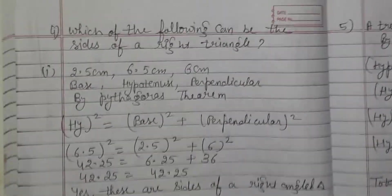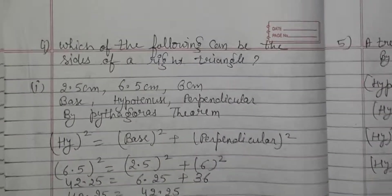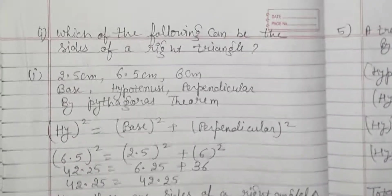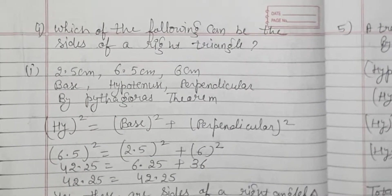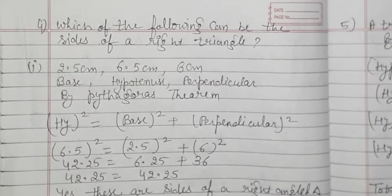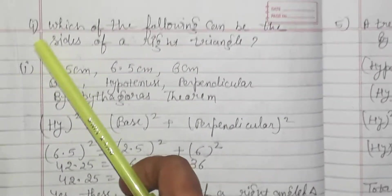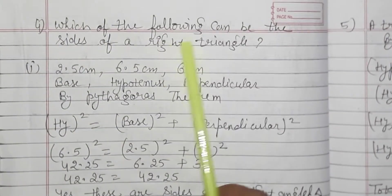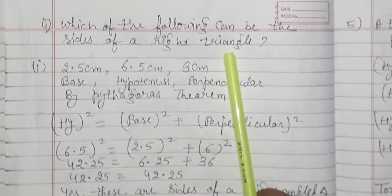Good afternoon to all the students. Yesterday we completed the first three questions of Exercise 6.5, the last exercise of this chapter. Let's start from the fourth question today: which of the following can be the sides of a right triangle?